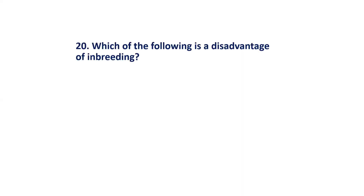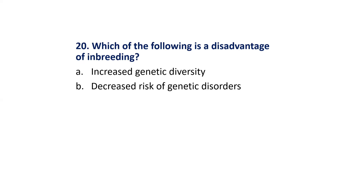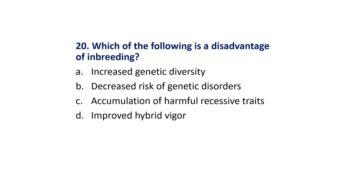MCQ 20: Which of the following is a disadvantage of inbreeding? Options are: Increased genetic diversity; Decreased risk of genetic disorders; Accumulation of harmful recessive traits; Improved hybrid vigor. The correct answer is Option C: Accumulation of harmful recessive traits.